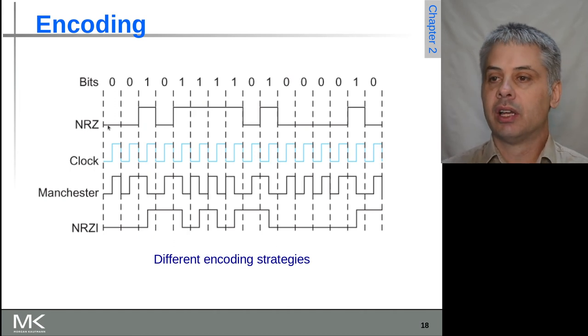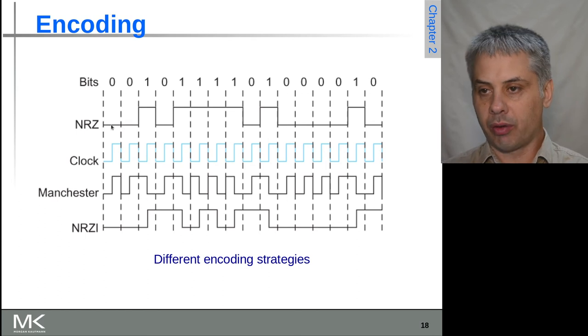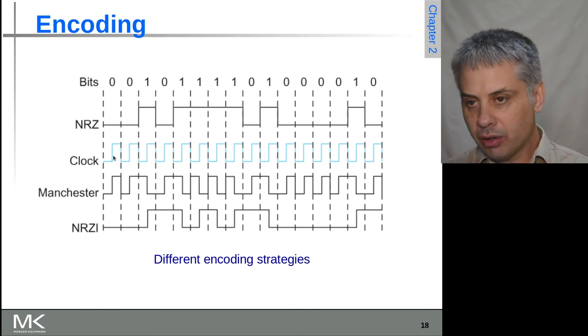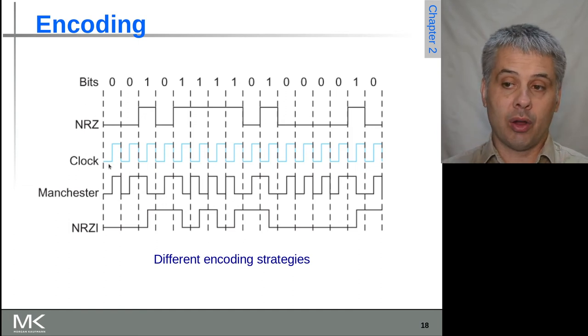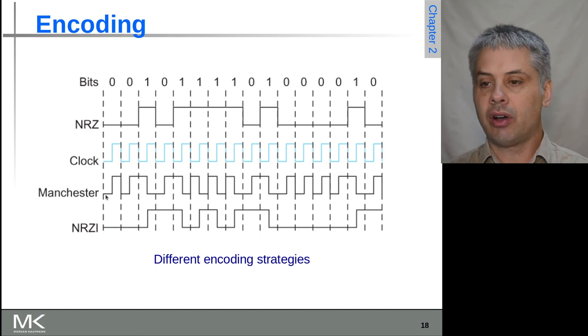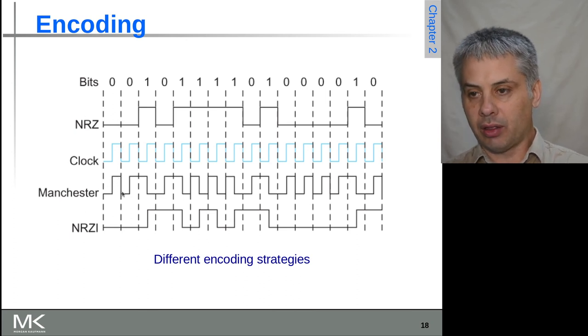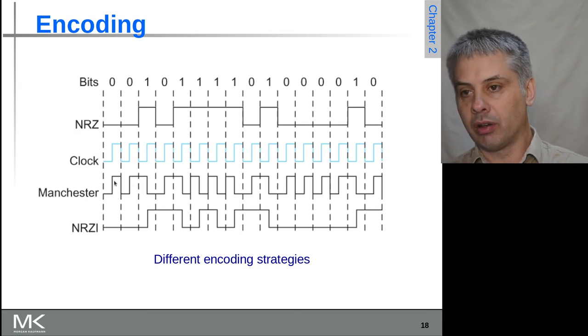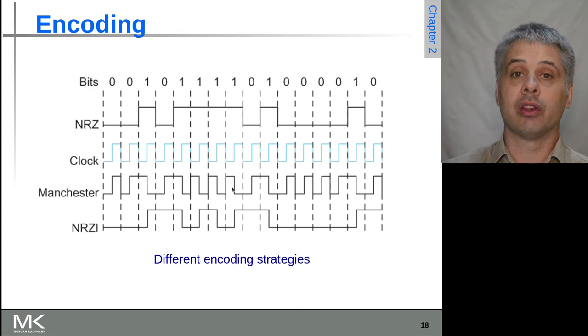If we have a look at an example of that, here's our original NRZ coding. Low for zero, high for one. There's our clock. The clock is low for half a cycle and high for half a cycle. Then the Manchester coding, we are exclusive ORing that together. So now we're seeing that the signal is changing twice as fast as the bits. It's low to high for a zero and it's high to low for a one. Now we have a transition in every bit, and that's fantastic for the clock recovery and those kind of aspects.